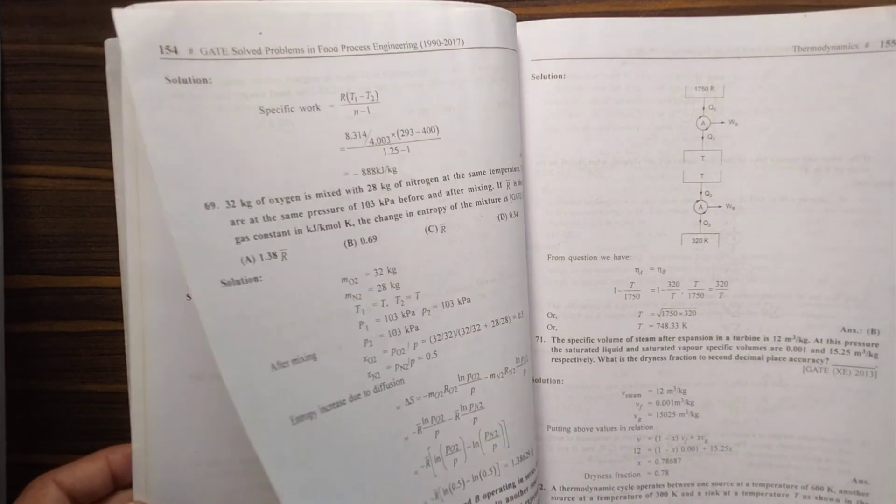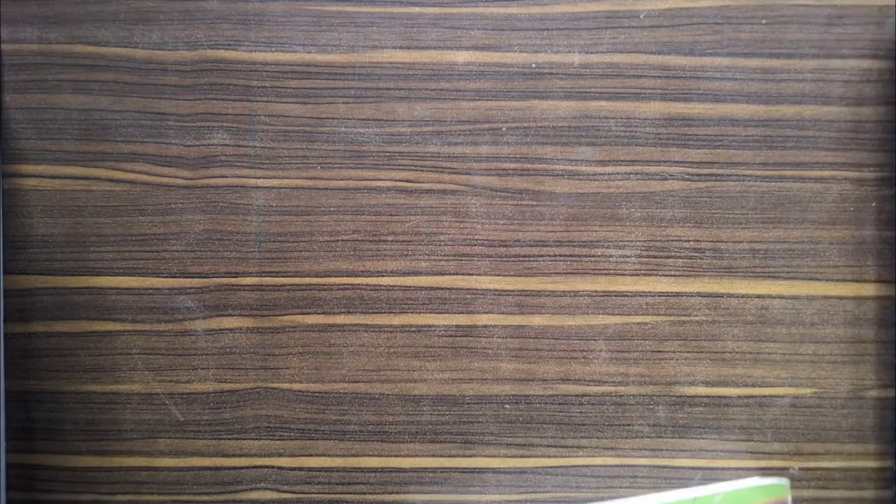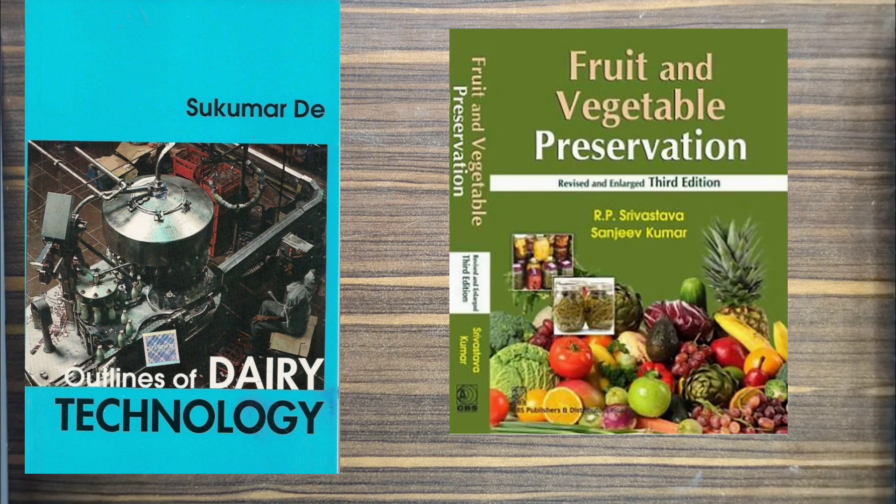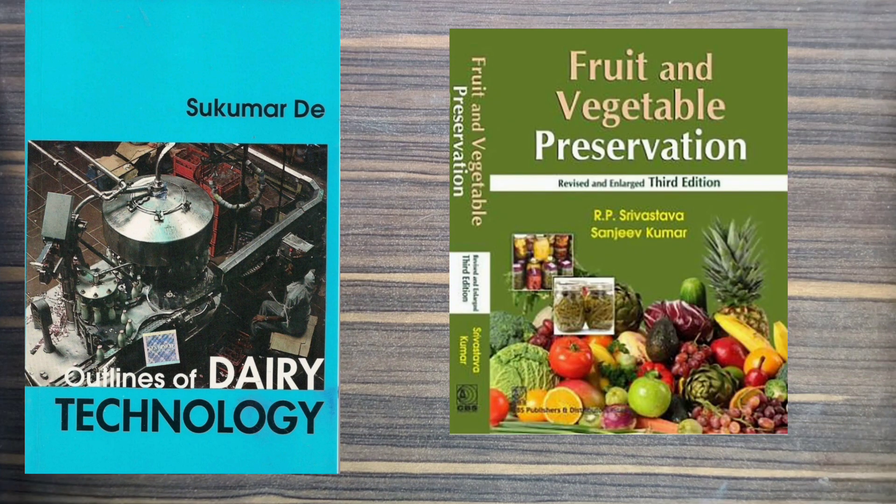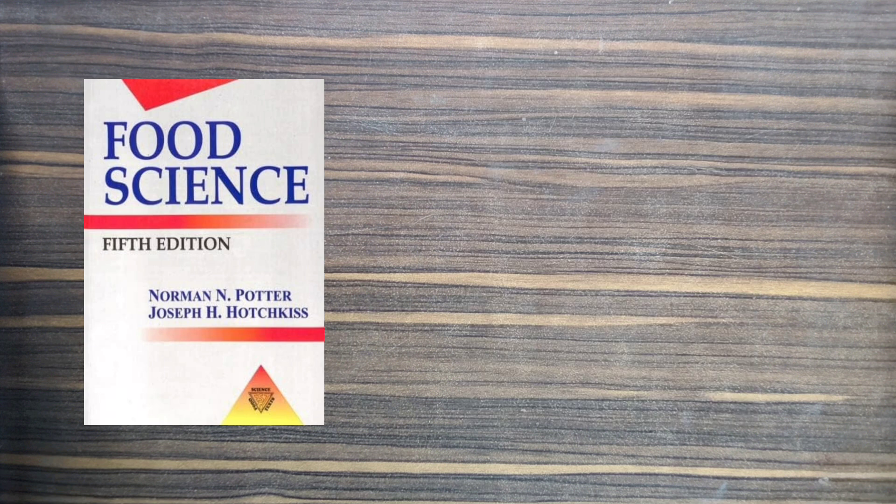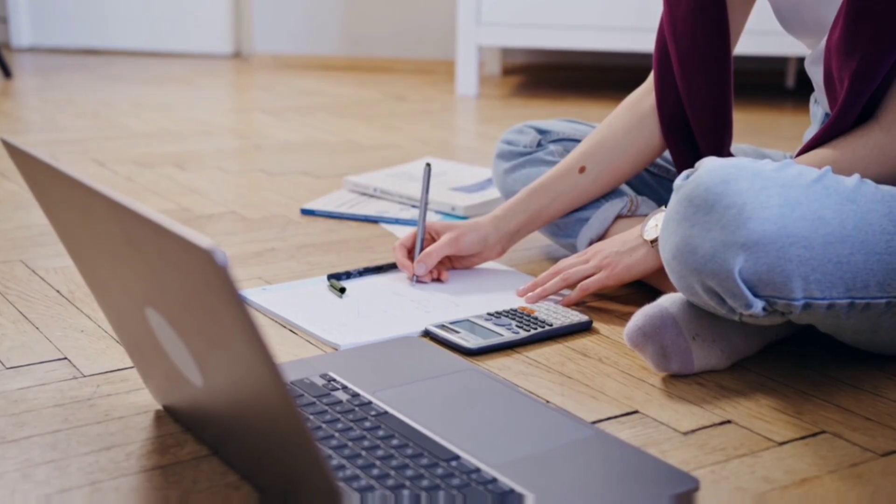In conclusion, Food Facts and Principle and GATE Solved Problems in Food Process Engineering are two excellent books that can help you prepare for the GATE food technology exam. These books provide a comprehensive guide to food technology and help you practice numerical problems and develop problem-solving skills. I highly recommend using these books together to build a strong foundation in food technology. With dedication and hard work, you can clear the GATE food technology exam and achieve your goals.